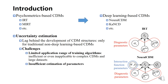Although there has been much development in the structure of CDMs, from psychometrics-based models to deep learning-based models, the research on uncertainty estimation lags behind that on advanced model structures. The challenges include limited application range of training algorithms, which means they are inefficient or even inapplicable to uncomplexed CDMs and large datasets, and insufficient estimation of parameters, because they did not address the difference between interaction function parameters and diagnostic parameters.